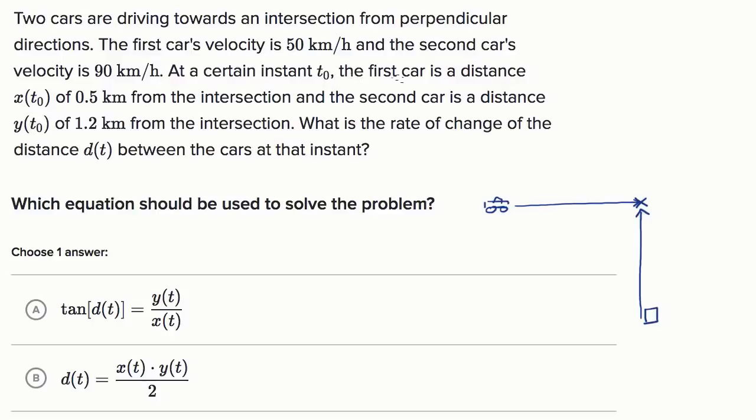So the first car is the distance x(t₀) of 0.5 kilometers. So this distance right over here, let's just call this x(t). And let's call this distance right over here y(t). Now, how does the distance between the cars relate to x(t) and y(t)?